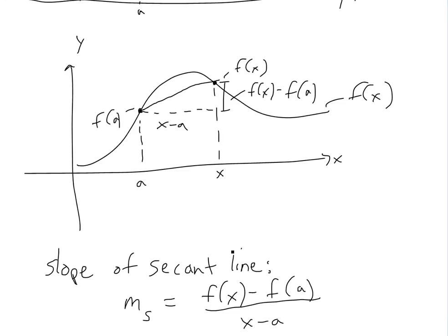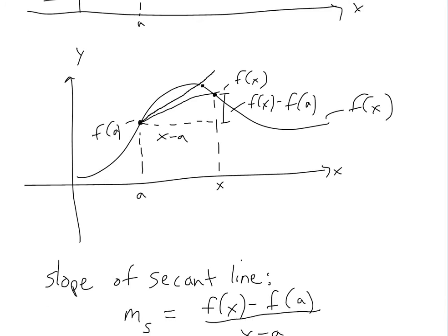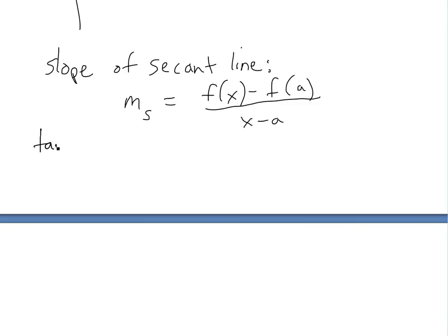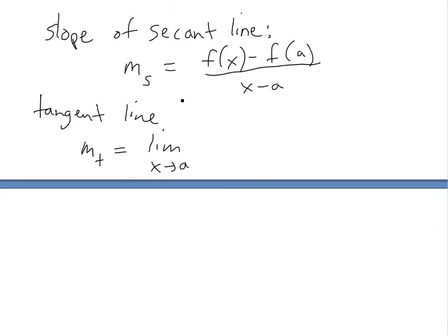So basically, this is what the secant slope is. But for the tangent, if we were to draw a secant line and then get closer and closer — x getting closer to a — once x is right at a, then we have the tangent line. Whereas all those approaching lines would be secant lines. So the tangent line slope, m_t, is the limit as x approaches a of f of x minus f of a, all over x minus a.